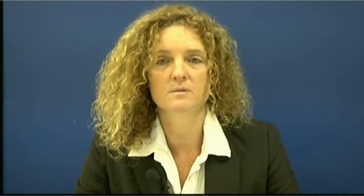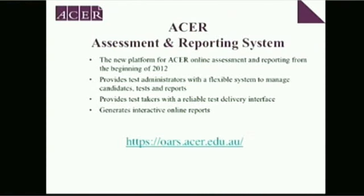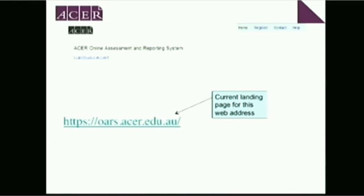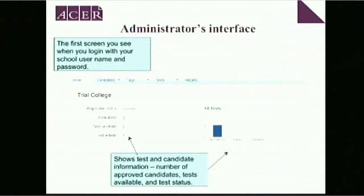In terms of the platform, the ORS platform is the ACER Assessment and Reporting System, which started in February 2012. It allows you to manage your candidates, reports, and the actual tests. It gives you a reliable test delivery interface and generates your interactive reports. You'll be given your own school name as your ORS login. The first screen you'll see will show your school, the test you've signed up for — PAT Reading — the number of candidates, and the number of tests completed or left to be completed.